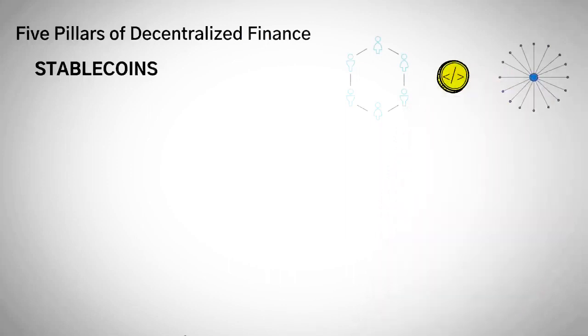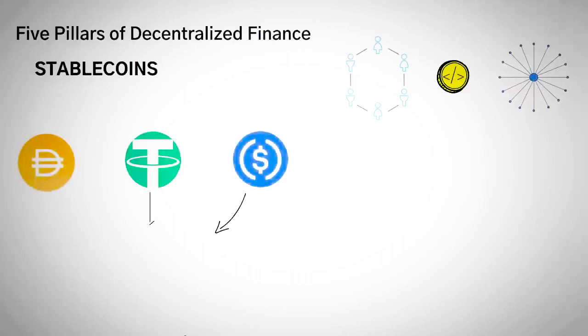For example, DAI, Tether, and USD Coin are all what we call stablecoins. This is because their price is tied to the United States dollar.